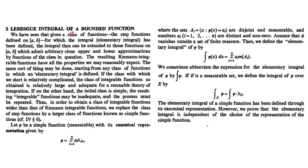To define the Lebesgue integral of a bounded function, we shift from step functions to simple functions. A simple function is measurable and can be written as φ = Σ aᵢ · χ(Aᵢ), where the Aᵢ's are disjoint measurable sets attaining constant values, and the aᵢ's are distinct and non-zero. We also assume that φ vanishes outside a set of finite measure.